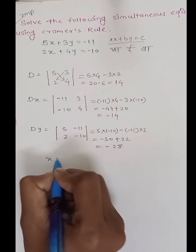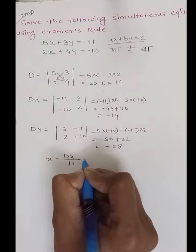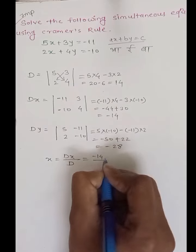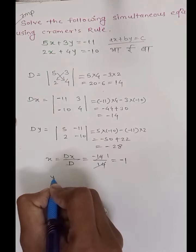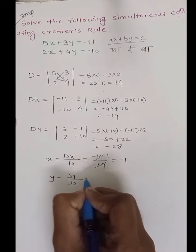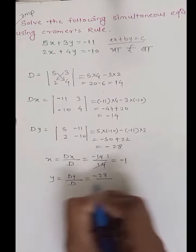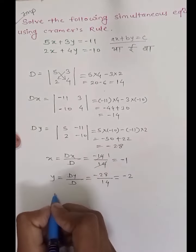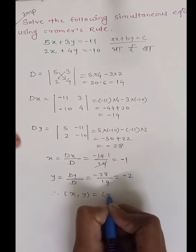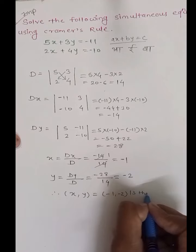How do we find the x and y values? How do we find them using the formula? x equals Dx upon D. Dx value is minus 14, D value is 14, so x equals minus 1. Similarly, Dy equals minus 28, so y equals minus 28 divided by 14 equals minus 2. Therefore, the solution is x equals minus 1 and y equals minus 2. This is the solution.